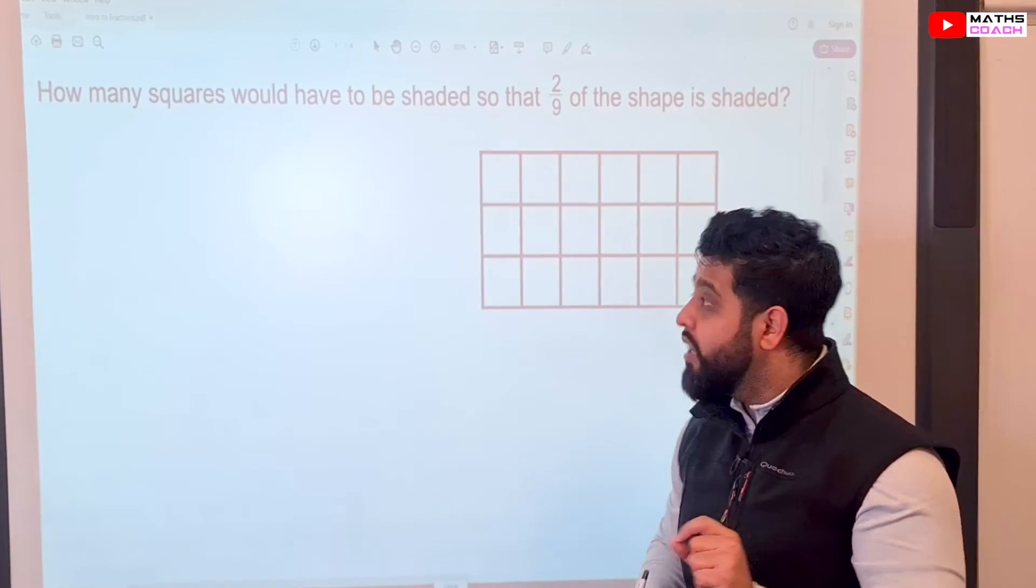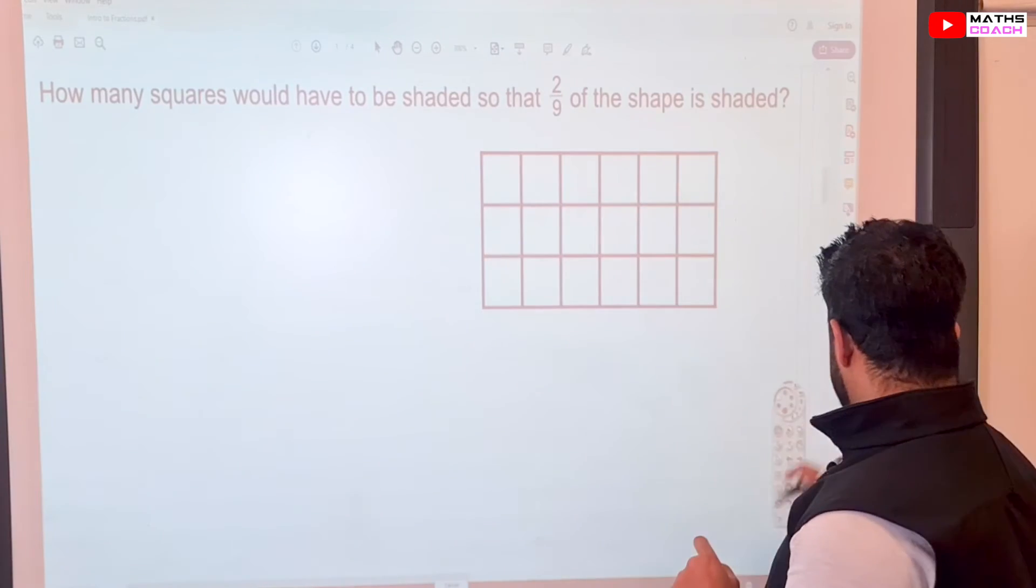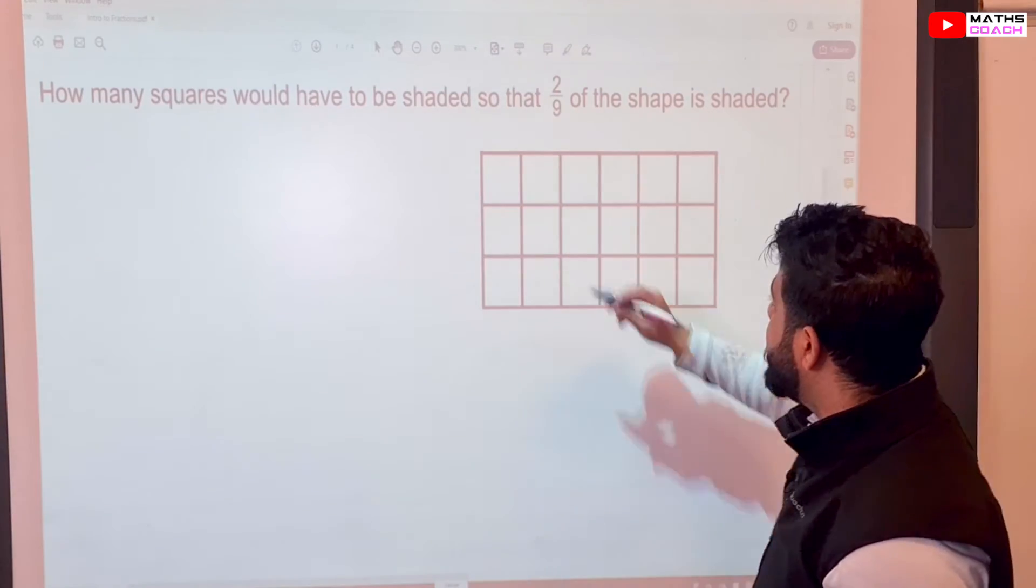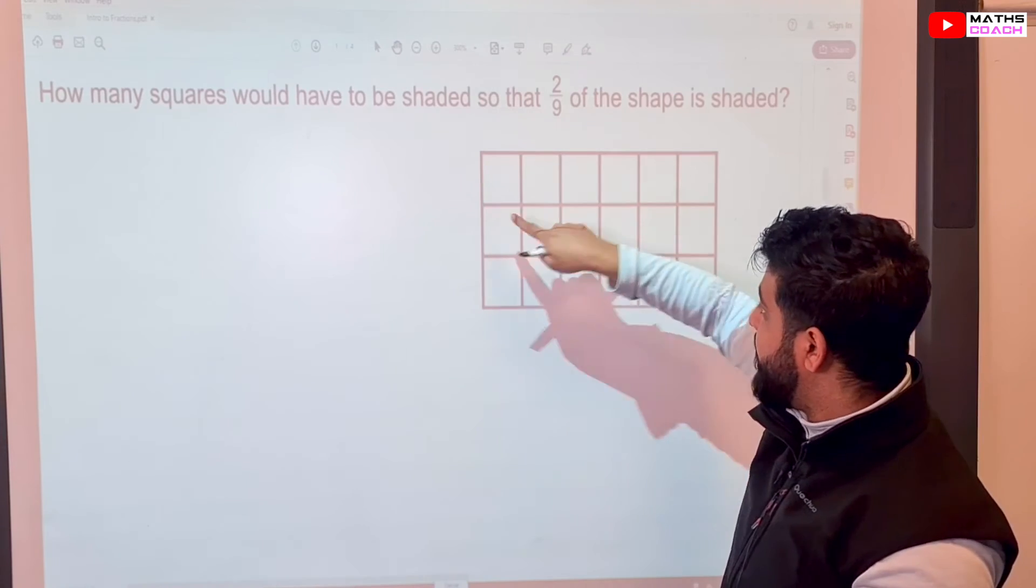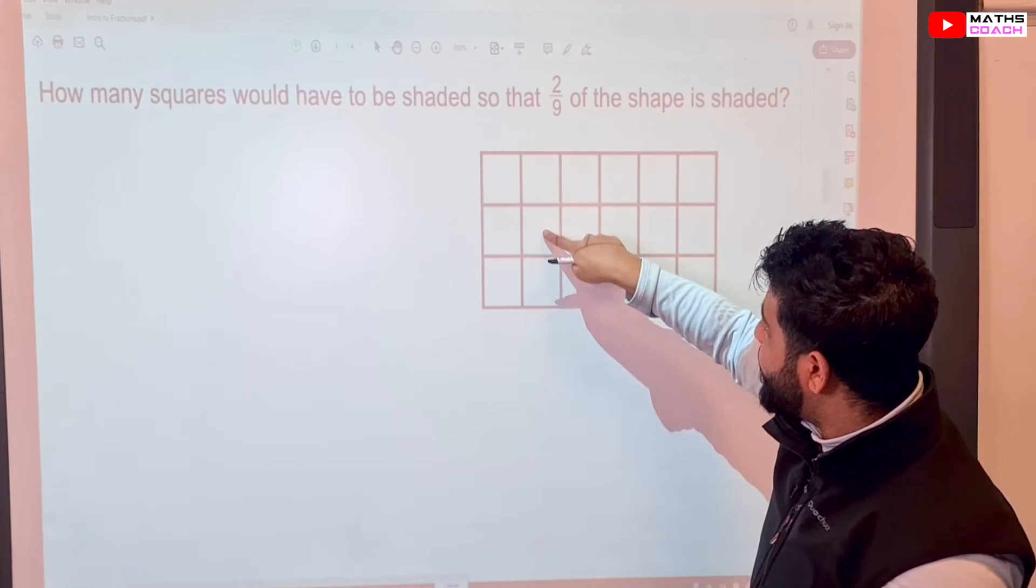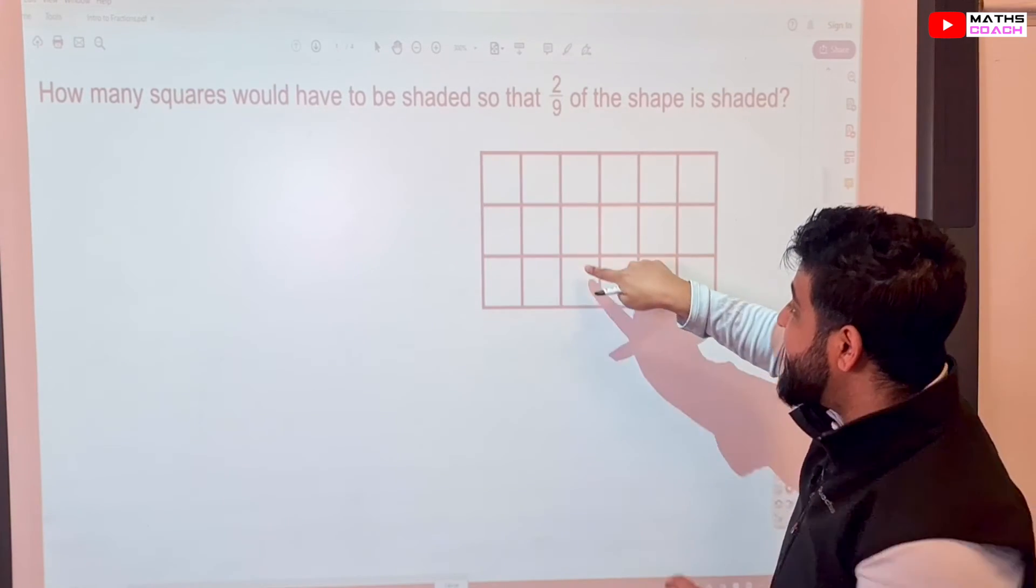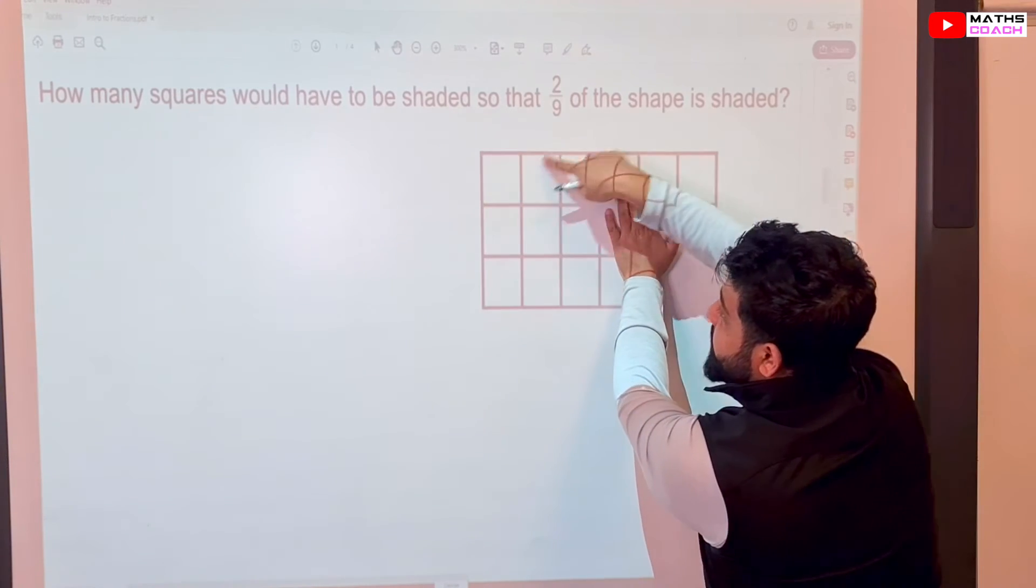But this time, for every nine, we will shade in two of them. So let me get my color out. Let's have a look. One, two, let's do it this way this time. So one, two, three, four, five, six, seven, eight, nine. So here, we have nine squares.